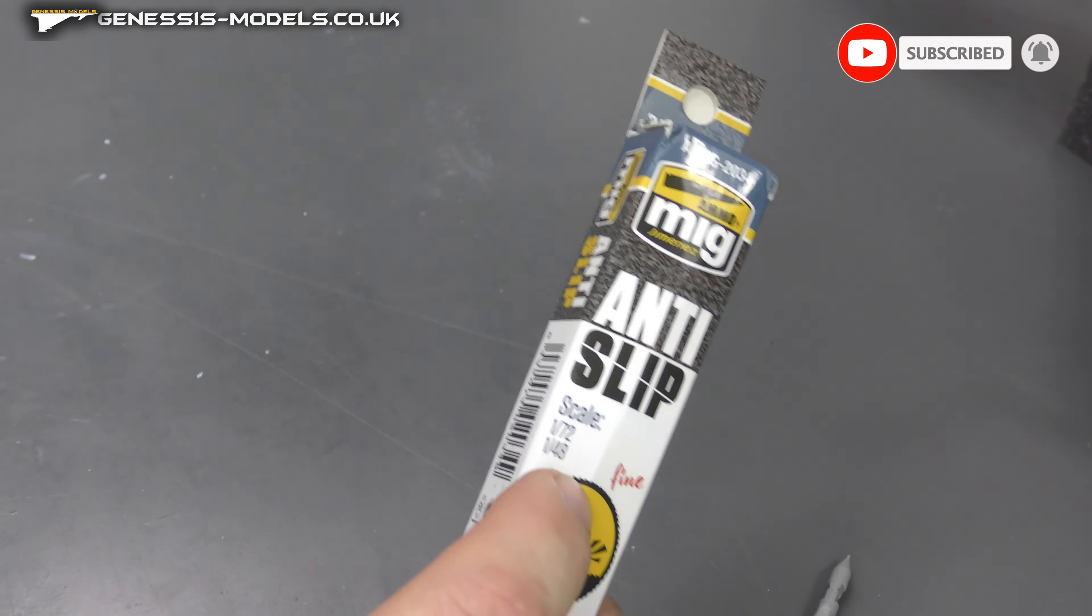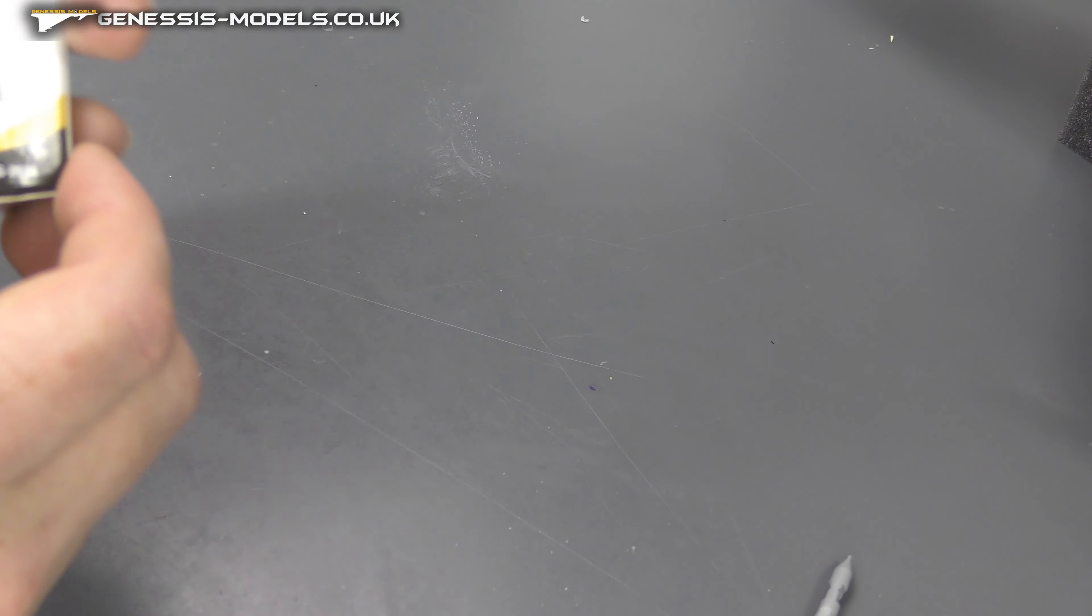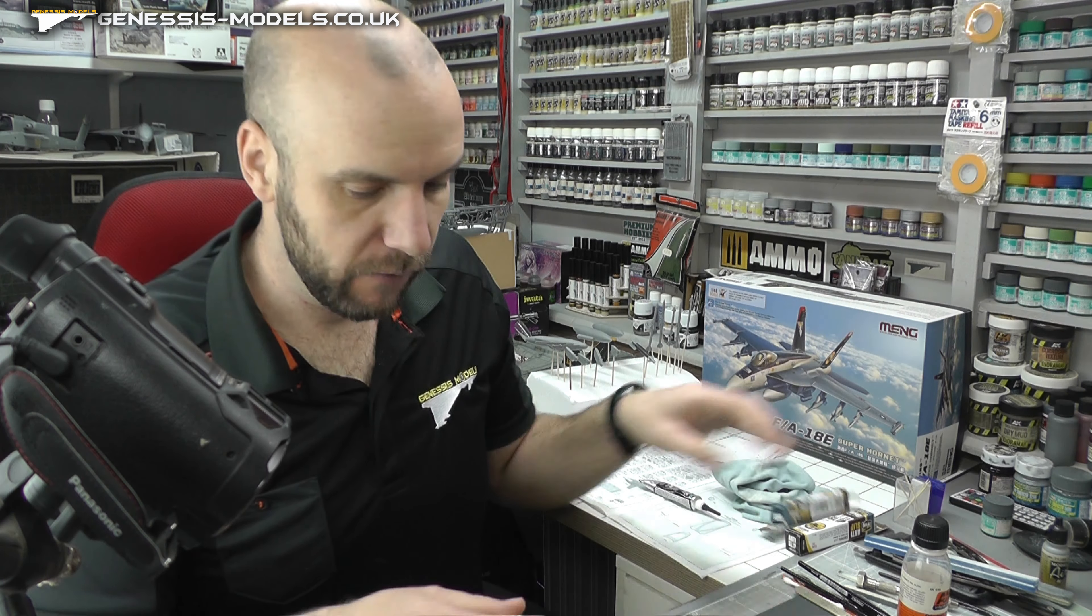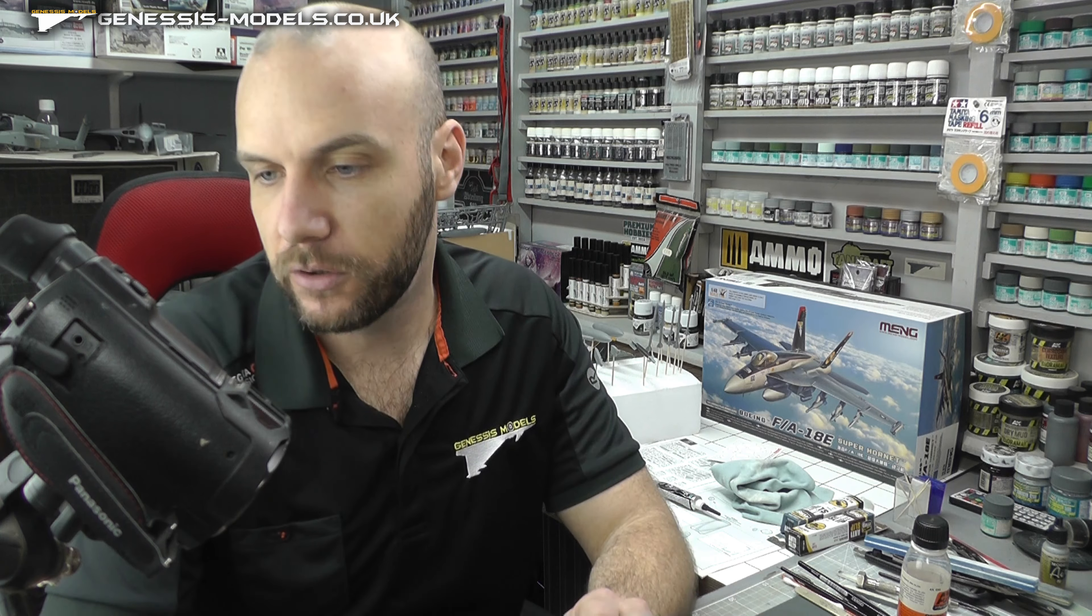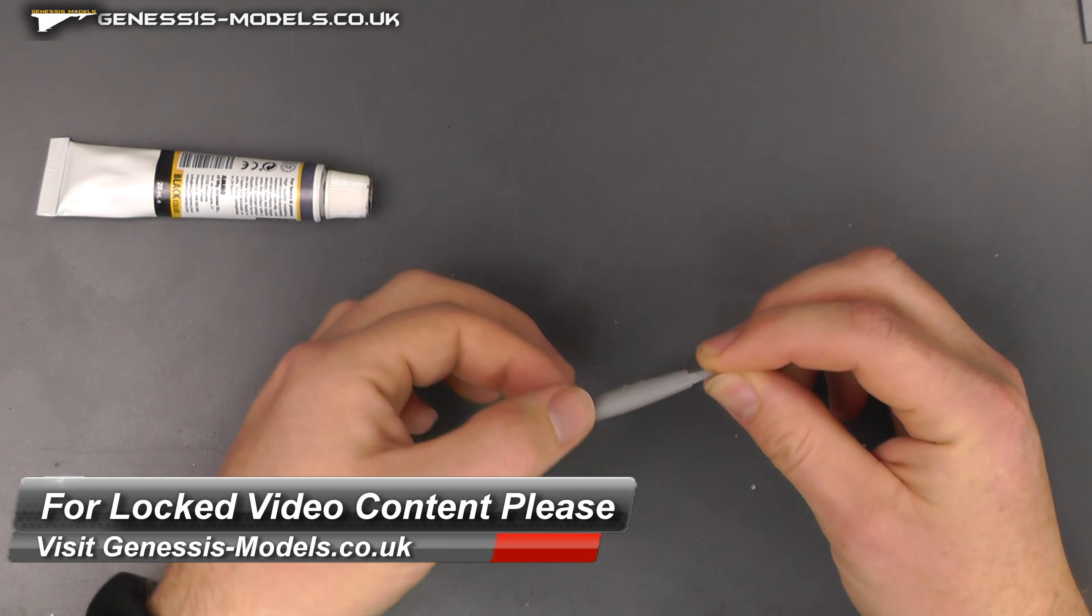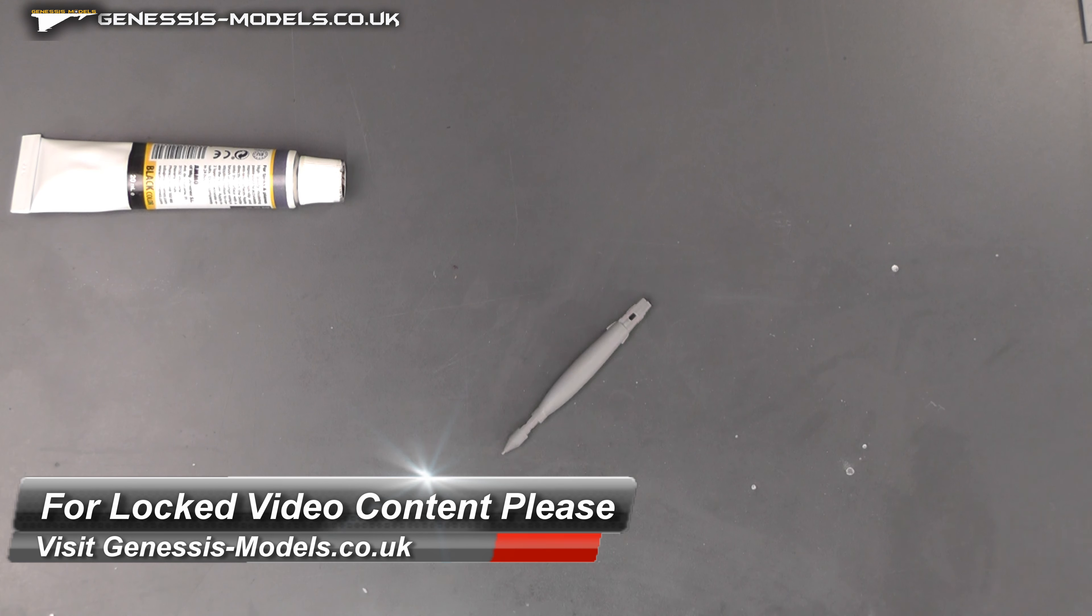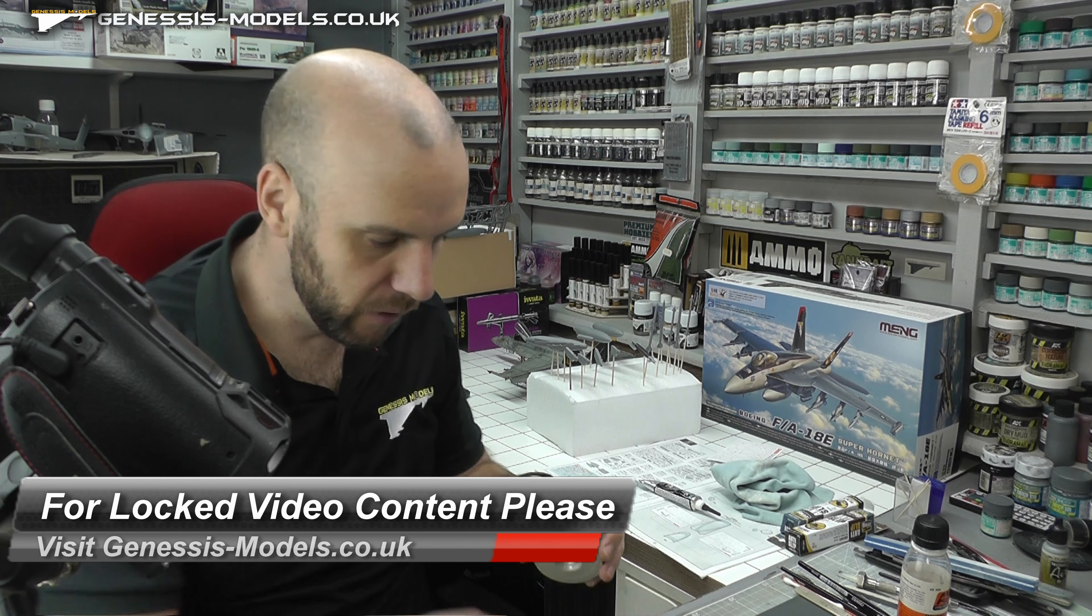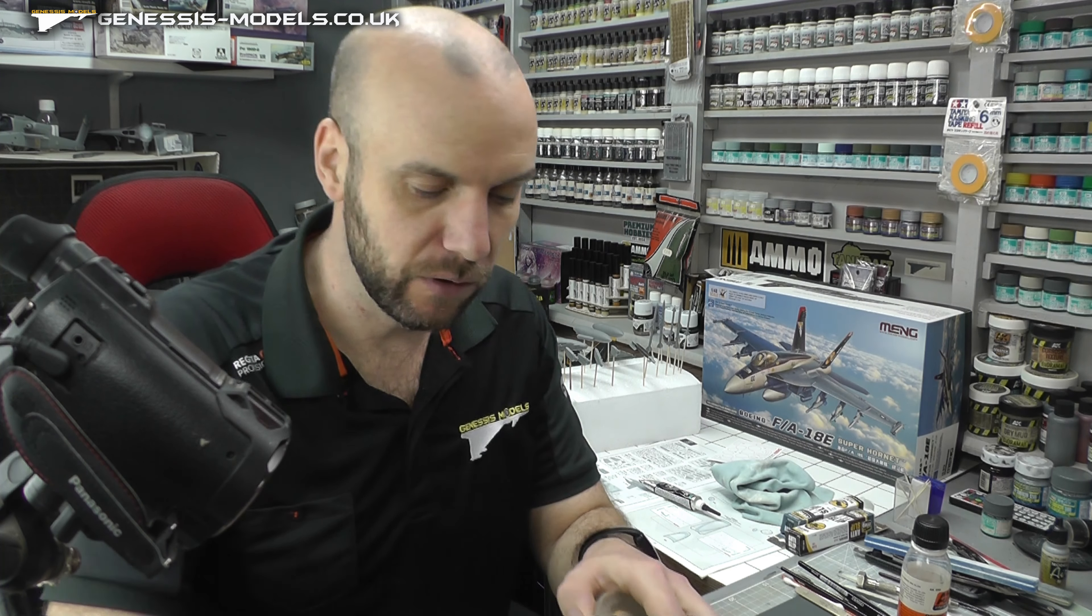So we're going to go with the 1/72nd, 1/48th because we are doing a 1/48th scale model here. I've got a nice example here with a GBU where we have that kind of rough texture around them. So first off, we want to sort of isolate where this is going to go.